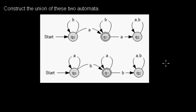I would like to show you how to construct the union of two finite automata and what does the union mean? That means we want to get a new automaton which accepts any word that is either accepted by the first automaton or the second one or maybe even by both.